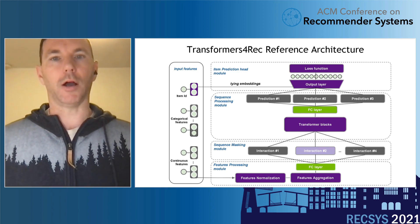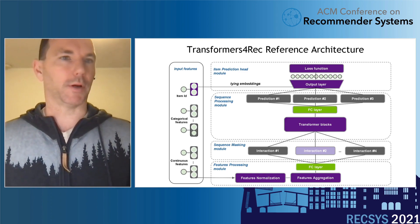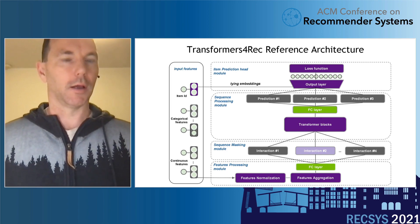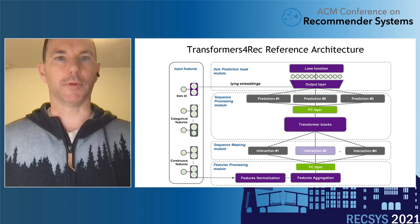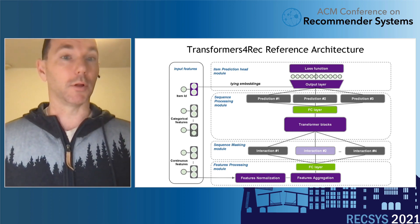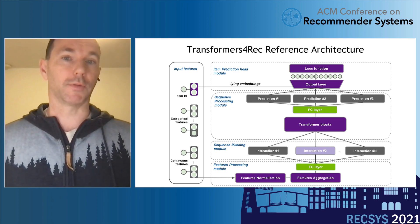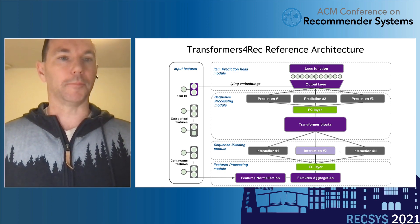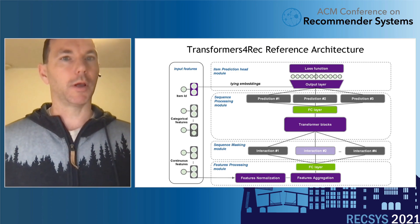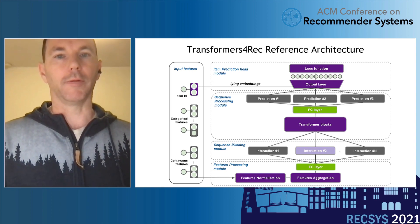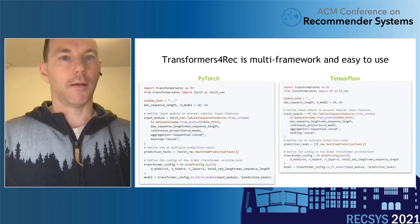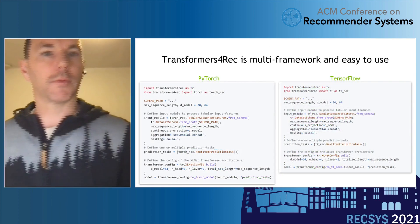Multiple towers can be fed simultaneously to the transformer blocks, which then pass predictions to the output layer. Key best practices are built into the library to improve performance, such as layer normalization — common in NLP to optimize transformers — and tied embeddings, which tie the output layer to the item ID, creating a cross-product relationship that is critical for good performance in the recommender system space.